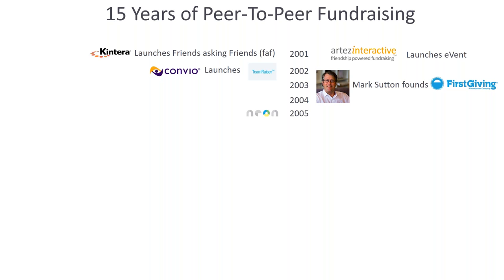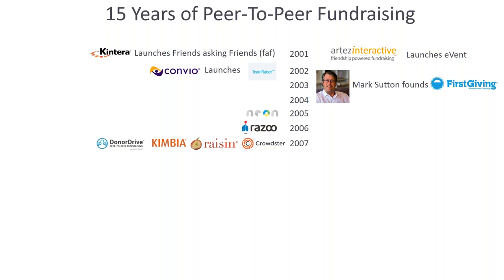Moving into 2005, Neon CRM came along — Jeff Gordy, who used to work at a nonprofit himself, wasn't seeing the tool he wanted, so he created Neon CRM. In 2006, Razoo came out. Then 2007 was a very busy year: Crowdster, Raisin, Kimbia, Donor Drive, and Everyday Hero launched in Australia, along with Gizooks.